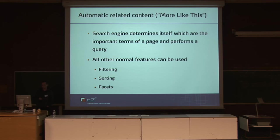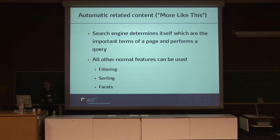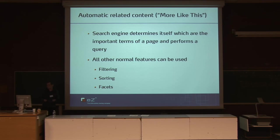Another nice feature, with quite some heuristics, is automatic related content. This is used by more and more large news sites like the BBC, and it tries to correlate articles that exist with the page you are viewing. Basically, it uses heuristics to perform a query in the background and assembles results without user interaction. All the features from Solr can be used here — like filtering, sorting, and the facets described before. It's really, really powerful, though it requires some tuning and experimentation before it functions the way you want.